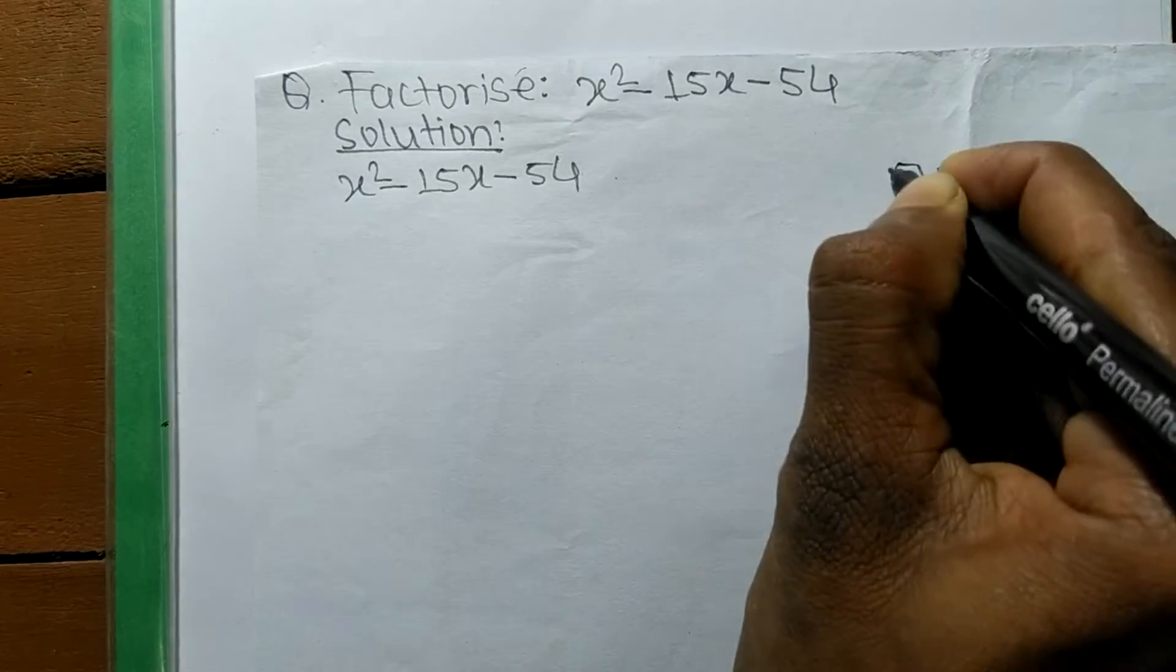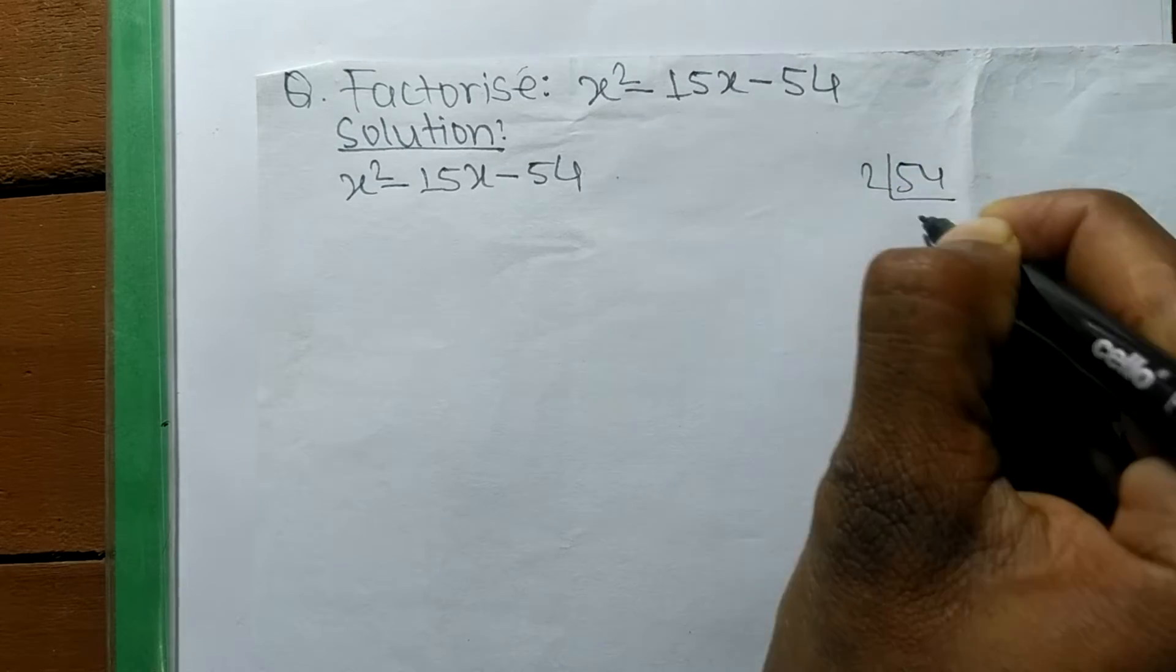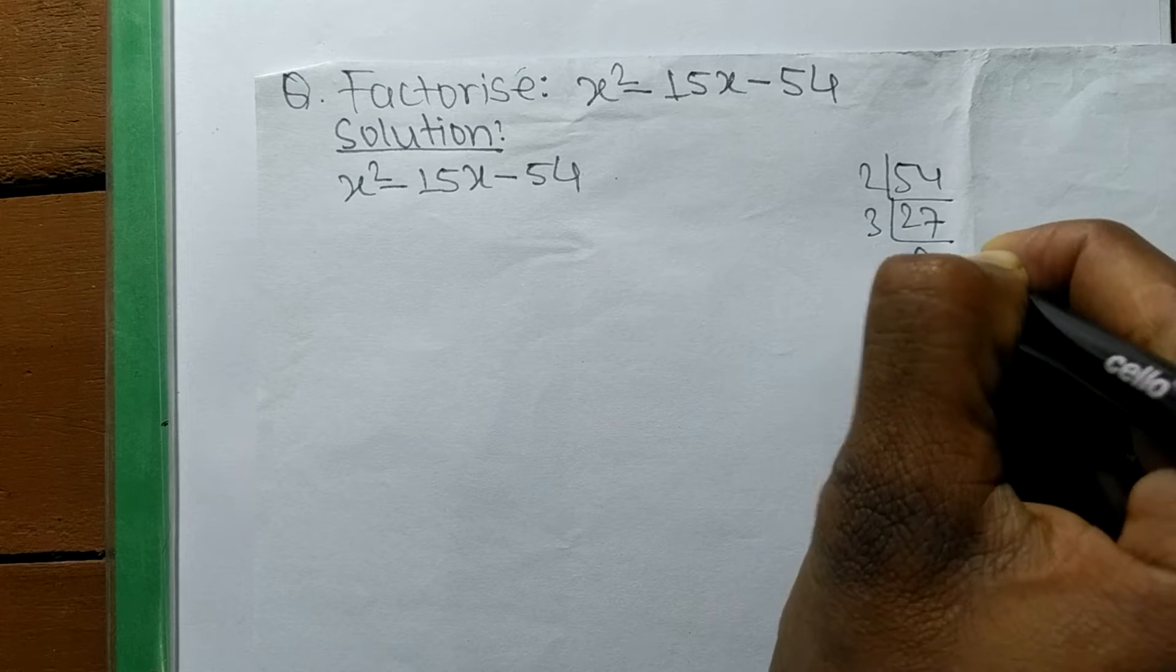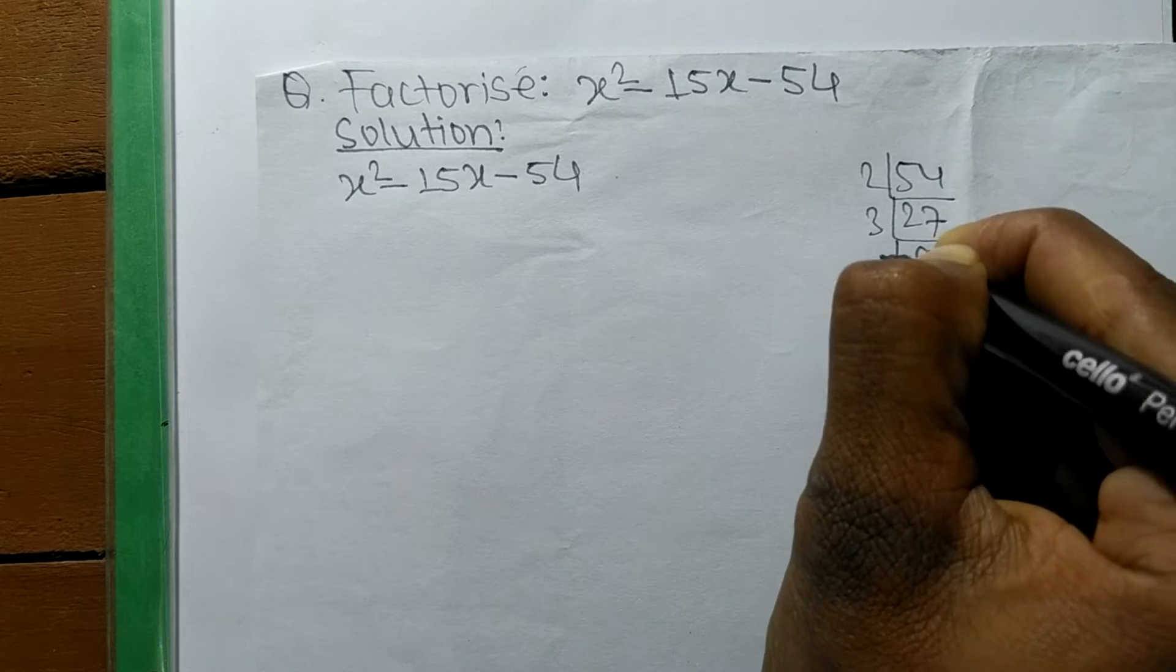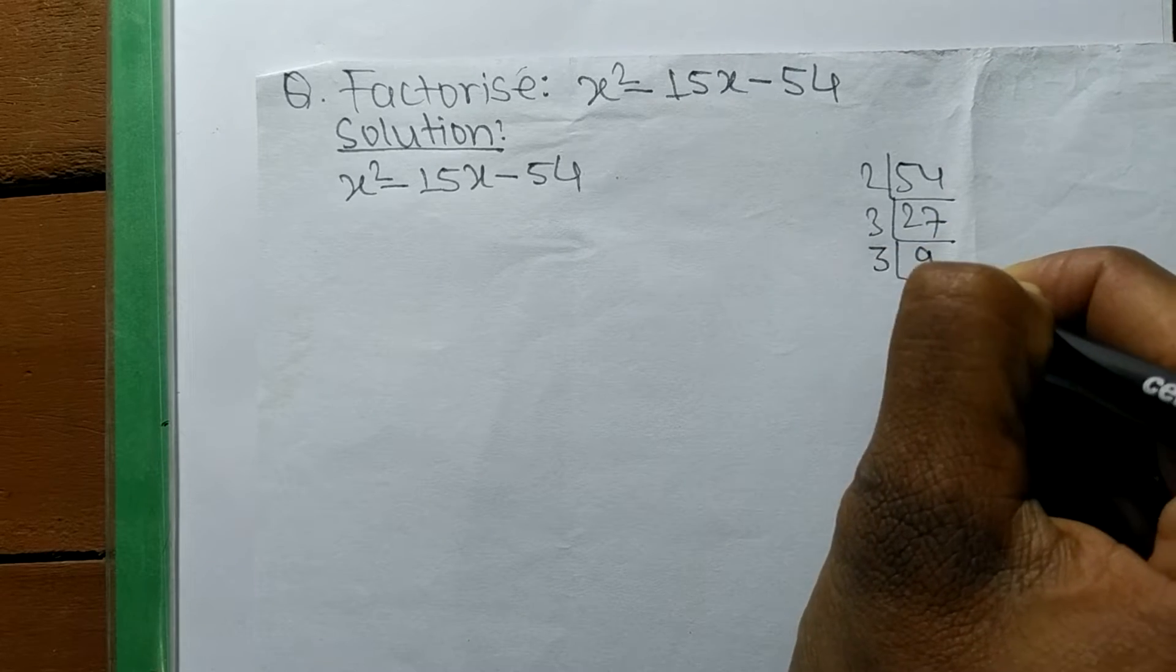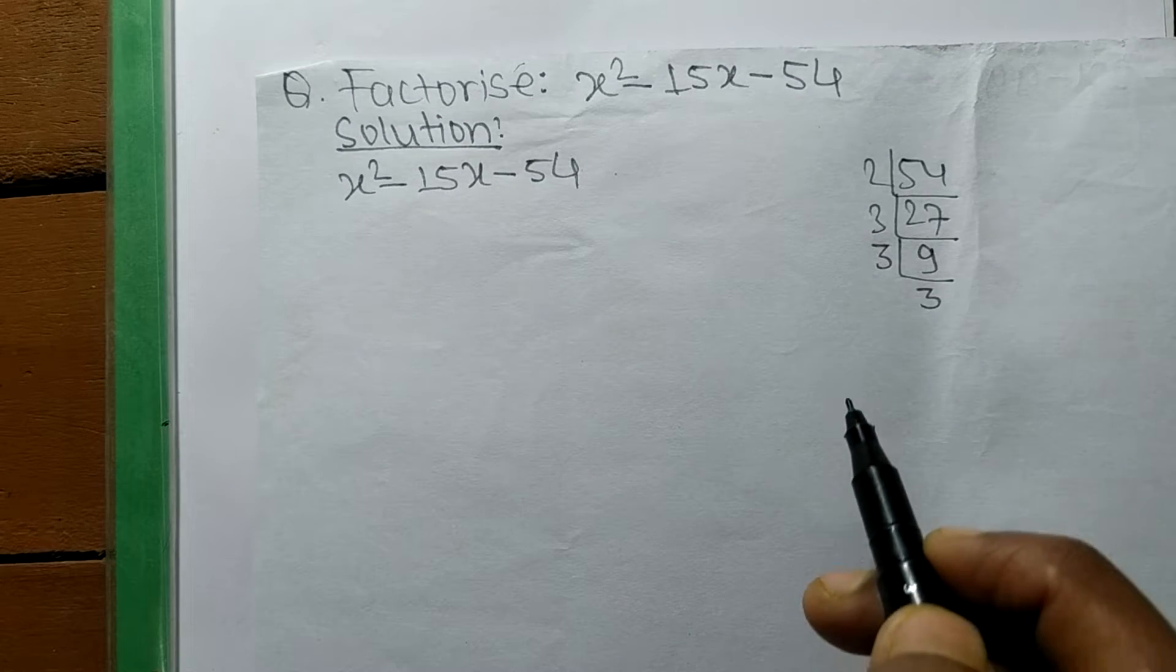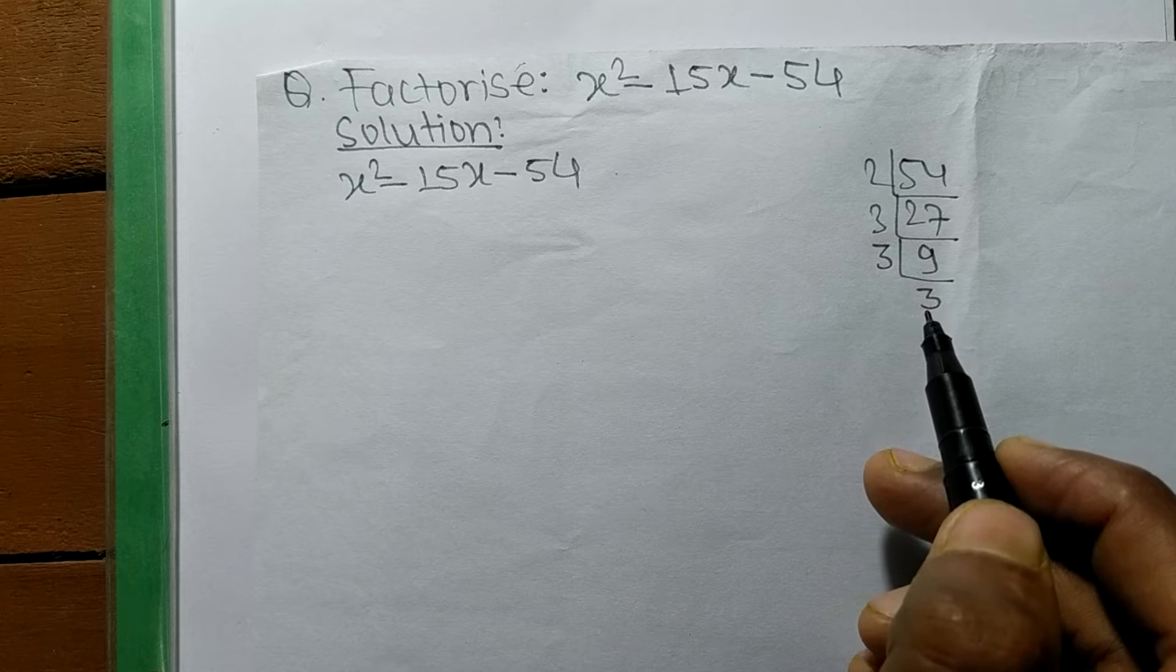54 equals 2 times 27. 27 is 3 times 9. 9 is 3 times 3. So we get the prime factors: 2, 3, 3, and 3.